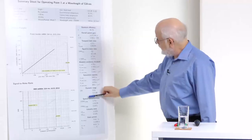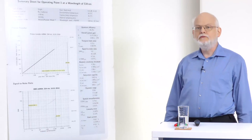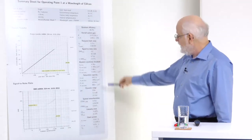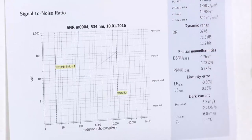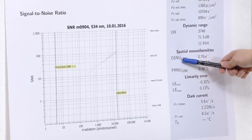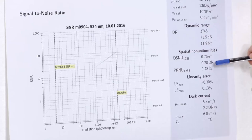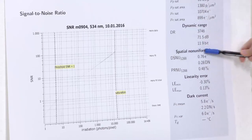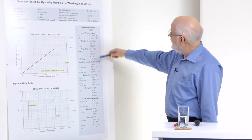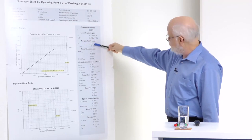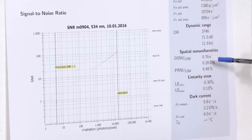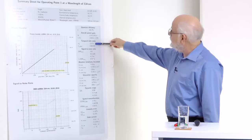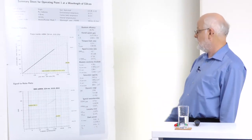So far we had everything related only to the degradation of the signal by temporal noise. Unfortunately we also have degradation by non-uniformities. We have two types of spatial non-uniformity. One is the dark signal non-uniformity, expressed again in electrons and in DN. You can directly compare it to the temporal dark noise. Here the temporal dark noise is about two electrons, and the dark signal non-uniformity is only less than one electron. So the dark signal is dominated by temporal noise and not by non-uniformity for this camera. For other cameras it might be different.